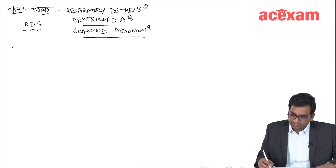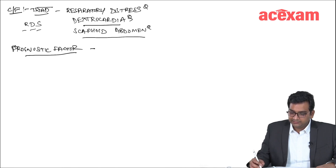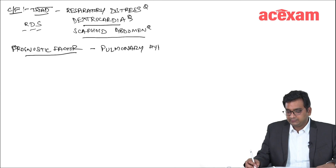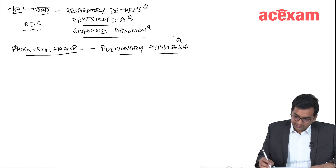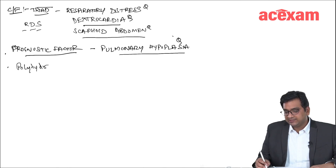What is the most important prognostic factor? The most important prognostic factor is pulmonary hypoplasia. It is also associated with polyhydramnios, so we can detect it during pregnancy scans.